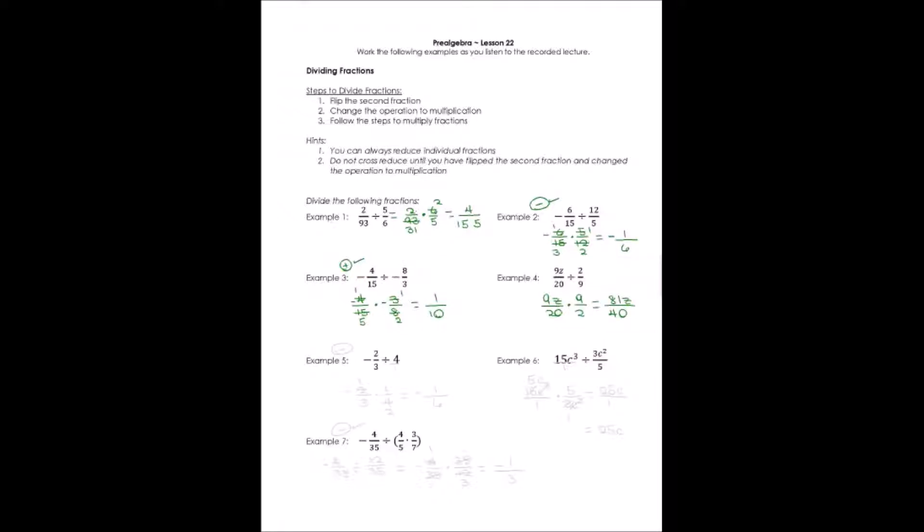Second, number 5 has division by a whole number. Let's turn it into a fraction by writing 4/1. Now, let's change this into -2/3 times 1/4. Well, I should have looked in the beginning and said, okay, I've only got one negative in this problem, so I'm going to have a negative answer.